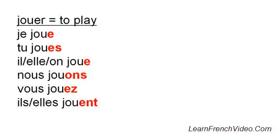You, in the formal or plural — vous jouez. Easy. Vous jouez. To say they: il or elle. Il is masculine for a group of men, elle for a group of women. Jouent — E-N-T. And that E-N-T is silent. So it's pronounced the same way as je, tu, and il — il, elle jouent.